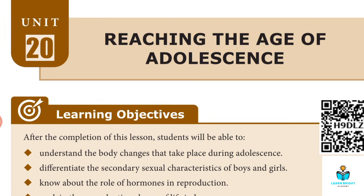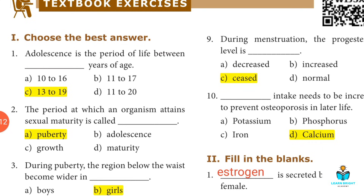Hi children. In this video, we cover 8th Science, Unit 20: Reaching the Age of Adolescence. We will have a book back question session. First question: choose the best answer.